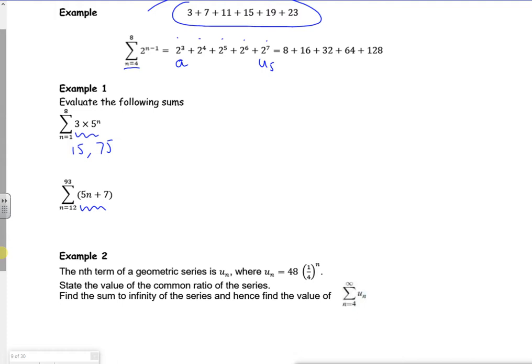So if I take my first term to be a, that's there, now times by five to get to there, so r is five. I want to go up to the eighth term there, so I want the sum of the first eight terms, so n is eight. It's geometric.